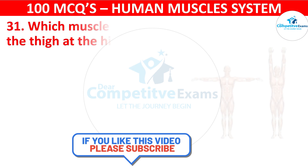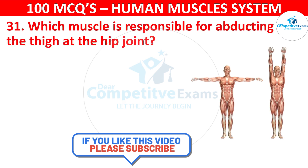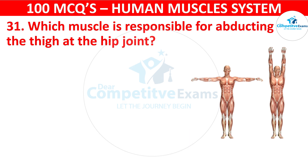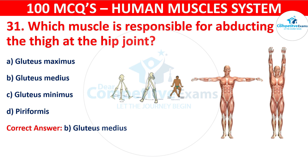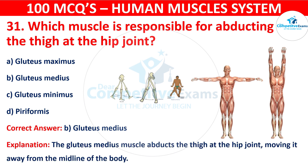Question 31. Which muscle is responsible for abducting the thigh at the hip joint? Your options are Gluteus maximus, Gluteus medius, Gluteus minimus, or Piriformis. The correct answer is B, i.e. Gluteus medius. The gluteus medius muscle abducts the thigh at the hip joint, moving it away from the midline of the body.